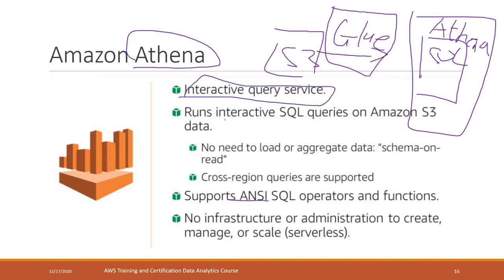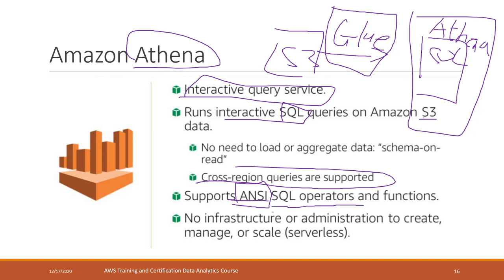Athena is an interactive query service where you can run SQL queries on data in Amazon S3 without needing to load the data into a database. It supports cross-region queries and ANSI SQL operators and functions. You don't need to maintain any infrastructure because it is serverless — you just use it when you need it and it is always there.